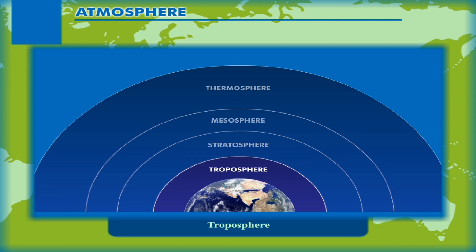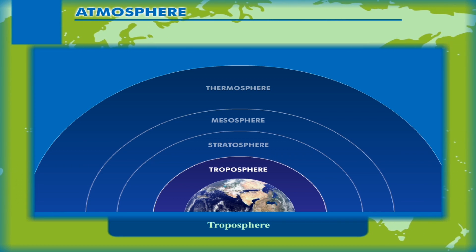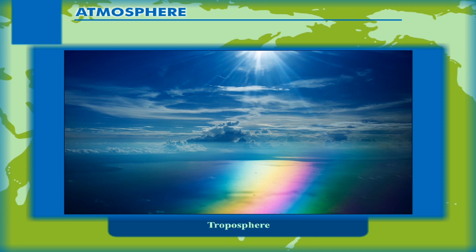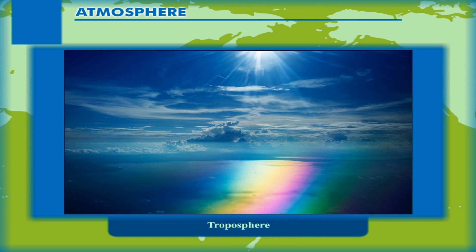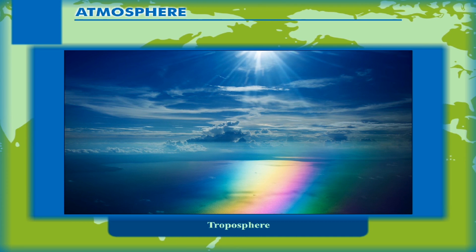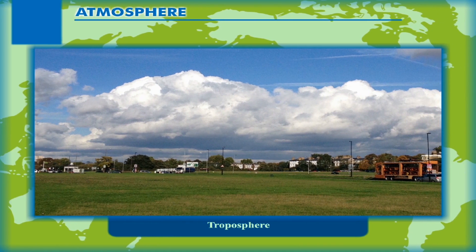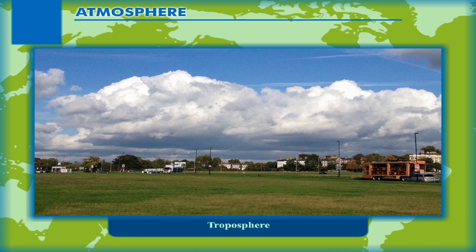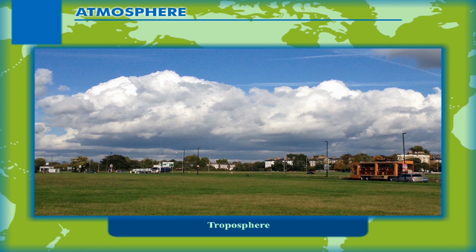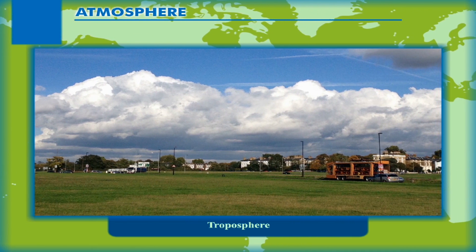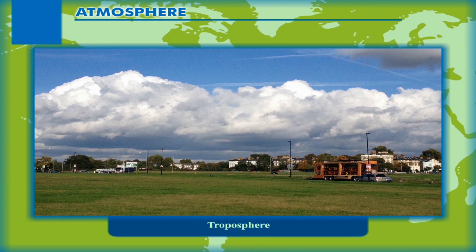Troposphere: The lowest and densest layer of the atmosphere is known as troposphere. About three-fourths of the mass of atmosphere is contained within this layer. This is the sphere in which changes related to weather conditions occur. It protects us from the heat of the sun during the day and keeps the Earth warm at night. The extent of this layer is about 18 km above the equator but only 8 km above the two poles. Most of the water vapour, dust particles and clouds are found in this layer. The upper limit of troposphere is called tropopause.